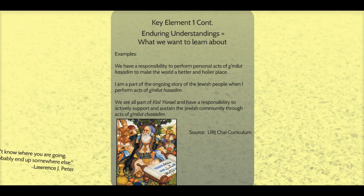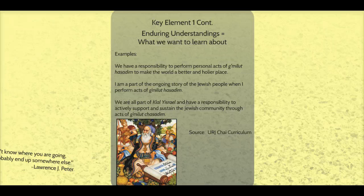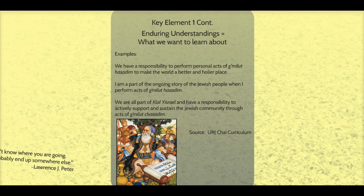Enduring understandings express what we want to learn about. Here are three examples of enduring understandings found in the URJ CHI curriculum, which is also UBD. The first EU is about the big idea of Tikkun Olam and gemilut chassidim for first or second graders. The second and third EUs are for older elementary students. As you read these EUs, think of them as goals or outcomes for your students. What kinds of questions need to be asked and investigated in order for students to really grapple with the proposition in the EU?